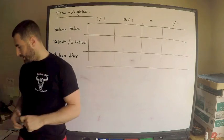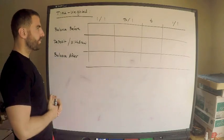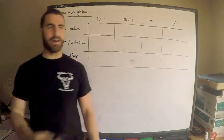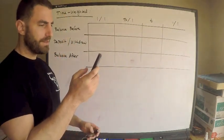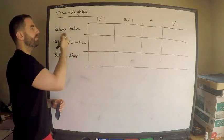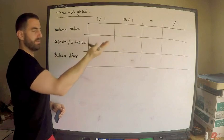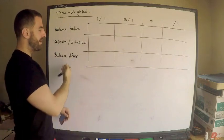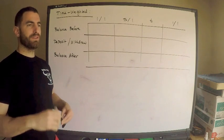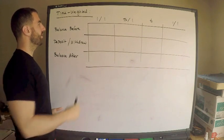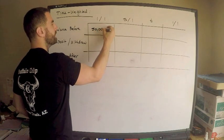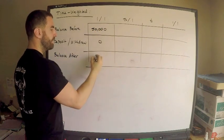Let's see what kind of cash flows I have. I have $50,000 on January 1st. This is the balance before I made some deposits and withdrawals, and there's my balance after. This is basically at the end of that month. In the month of January 1st, I started with $50,000. I deposit and withdraw nothing, which means at the end of the month I still have $50,000.